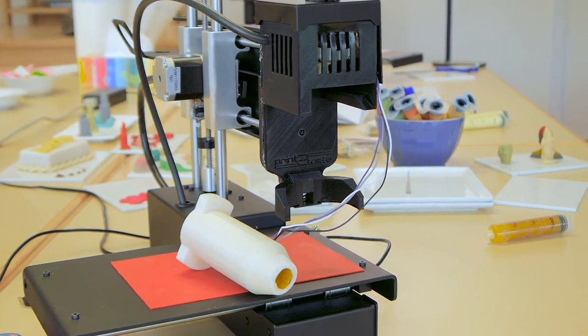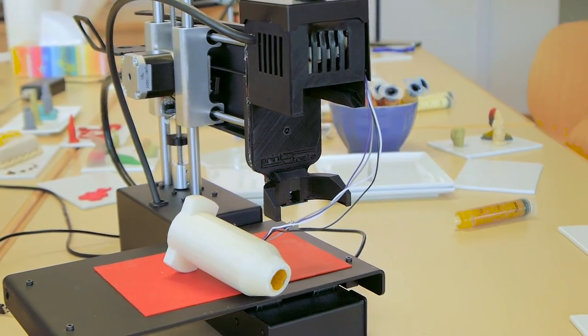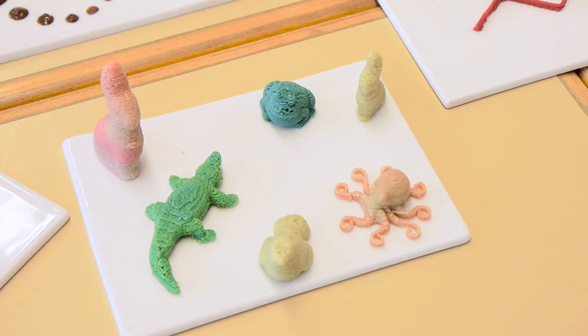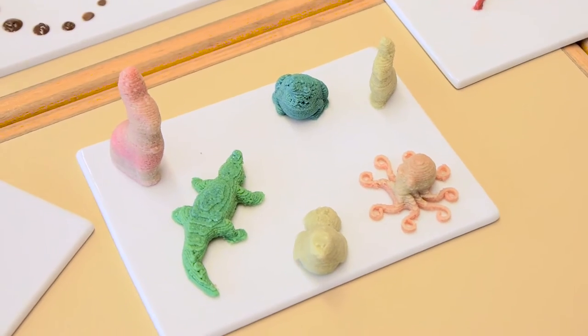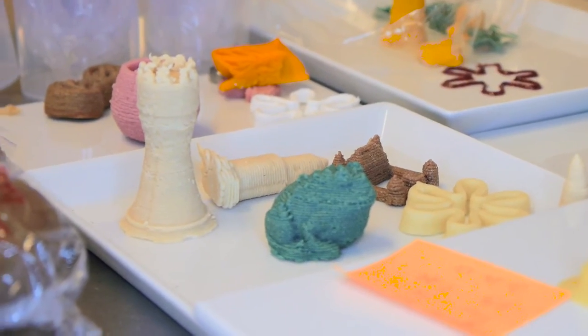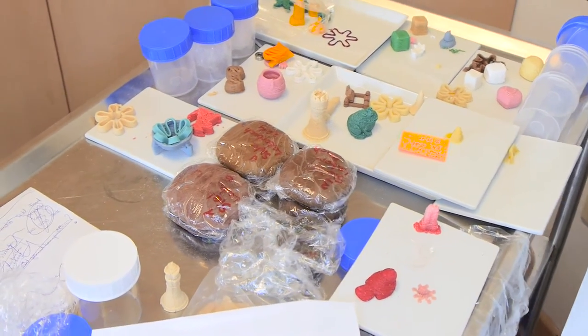You can basically print all kinds of materials, foods which in one state have a fluid behavior like bakery products, marzipan, meringue, jellies.